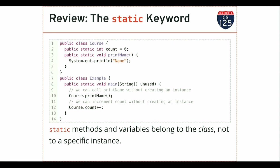When we add the static keyword to a variable or to a method, it becomes part of the class, not an instance of the class. So a static method can be called without an instance of the class. I haven't created an instance of the course class here — in order to call an instance method I need an instance of the class, but this is not an instance method. This is a class method or a static method.